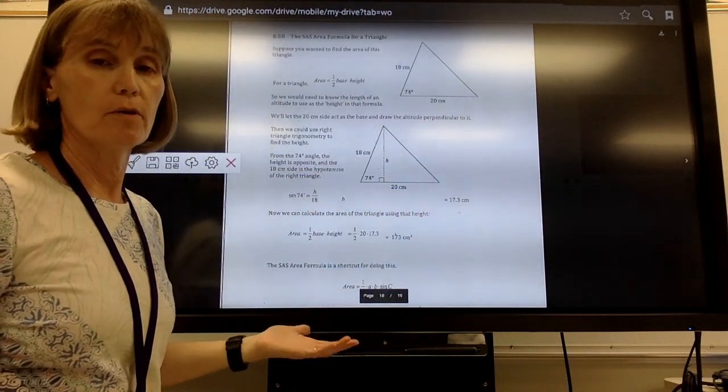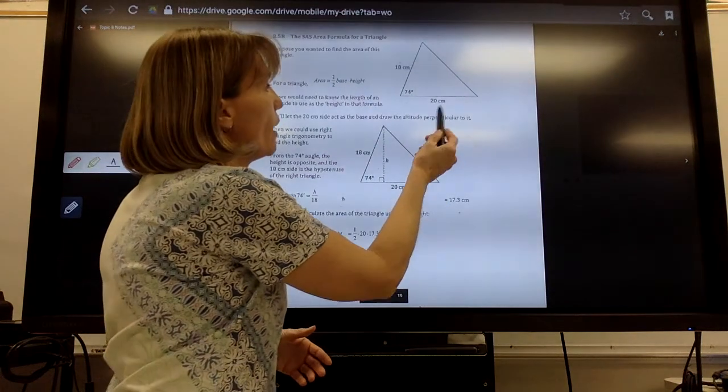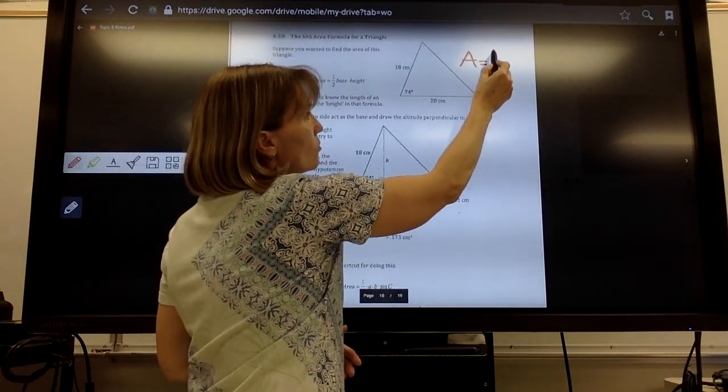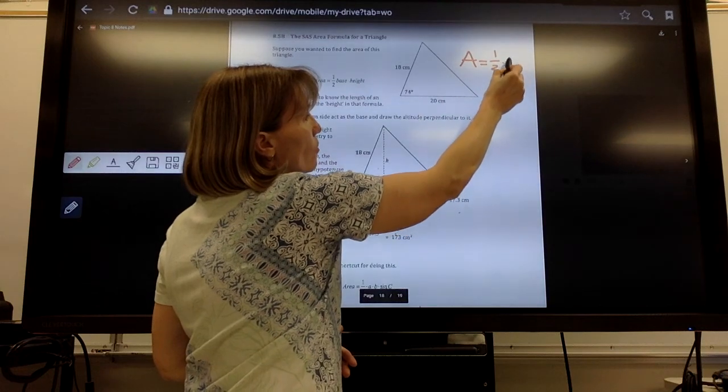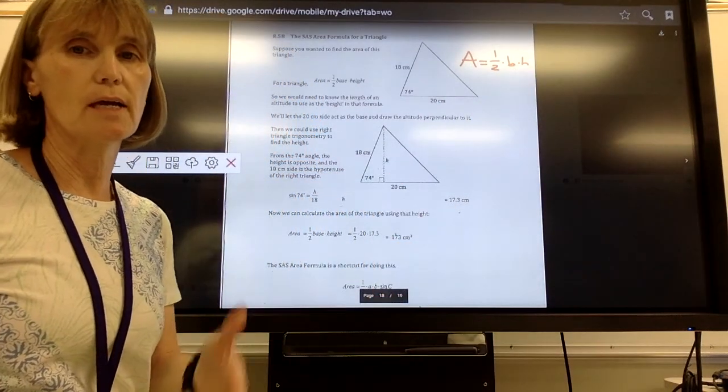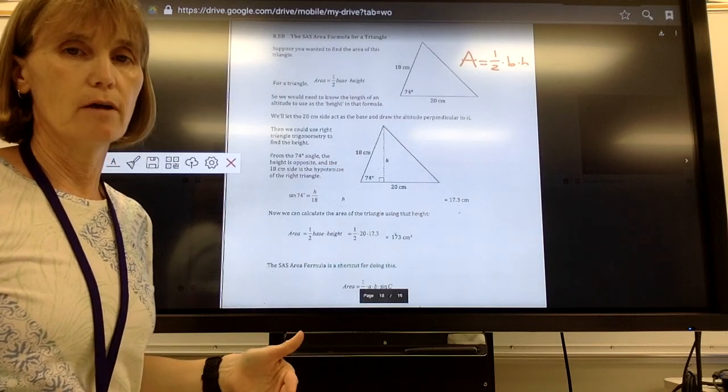You might know this from previous math classes, but we have a formula for finding the area of a triangle. We say that area equals one-half the base times the height. So if I take one-half times the base times the height, I have the area of a triangle.